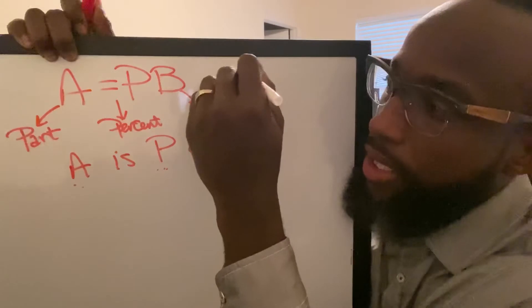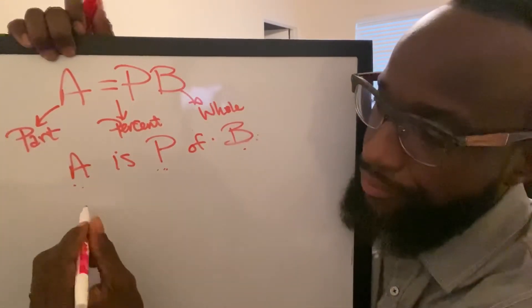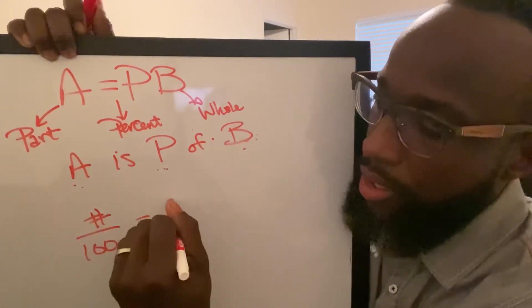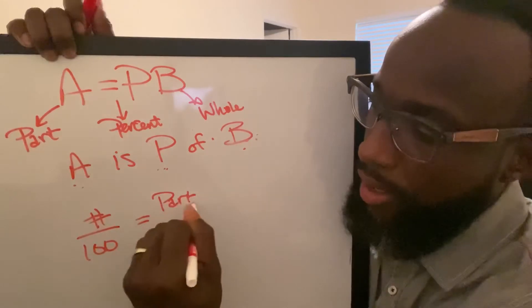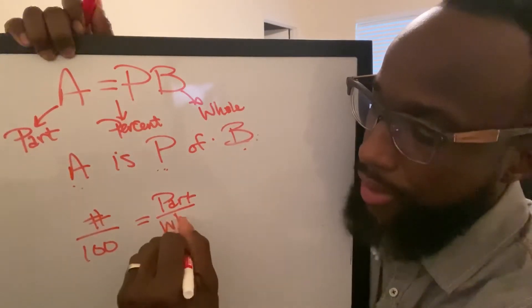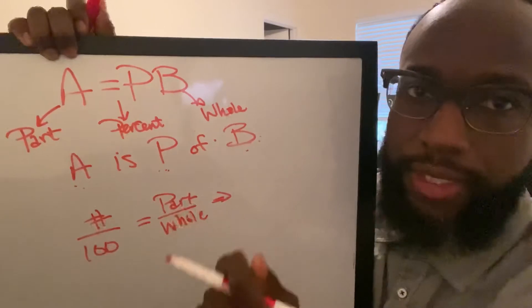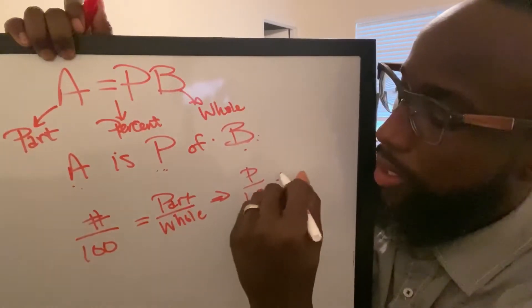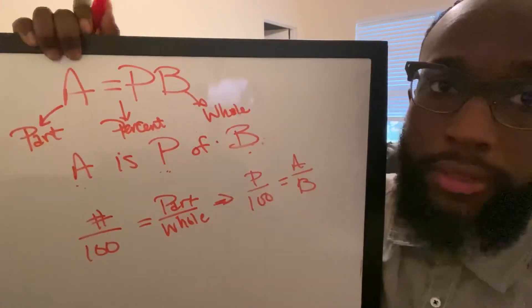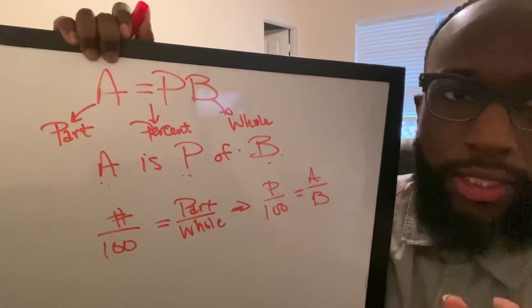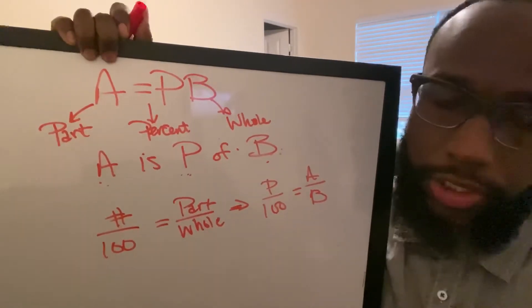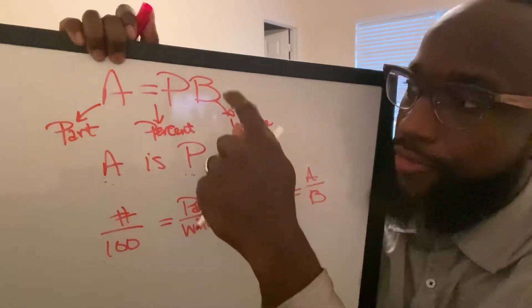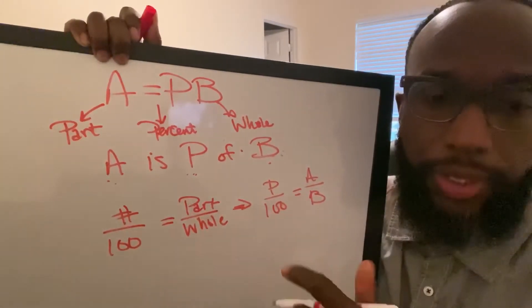So you have this equation to look at, and then you have the proportion, which is the percent over 100 equals the part over the whole number. In terms of APB, it'll be P over 100 equals A over B. Pause the video to write this down, and we're going to work out our problems derived from this formula and this proportion.